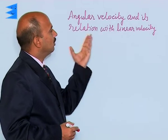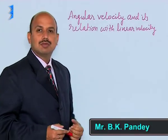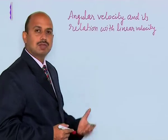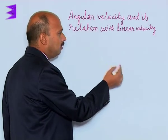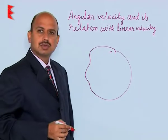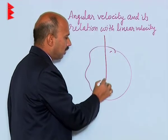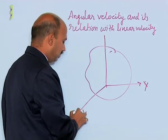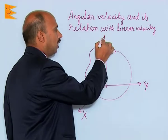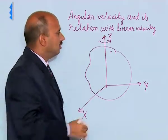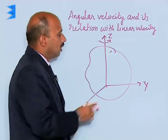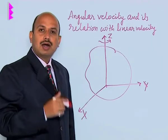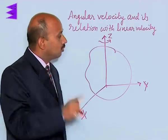The next concept is angular velocity and its relation with linear velocity. We have already done angular velocity in circular motion, and now we will apply the same concept to the motion of a rigid body. Suppose you have a rigid body lying in the XY plane, rotating about the Z axis. This axis is fixed and is called the axis of rotation. When the body rotates about the Z axis, each and every particle constituting this body moves in a circular path in a plane perpendicular to the axis of rotation.